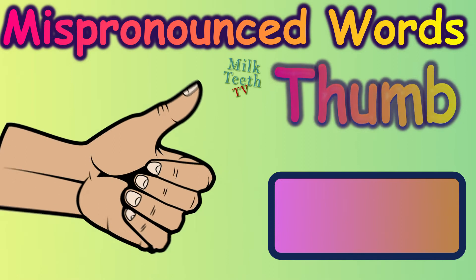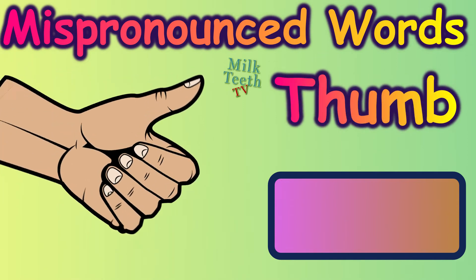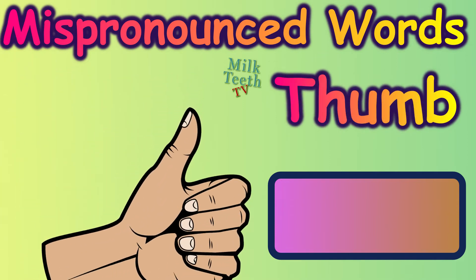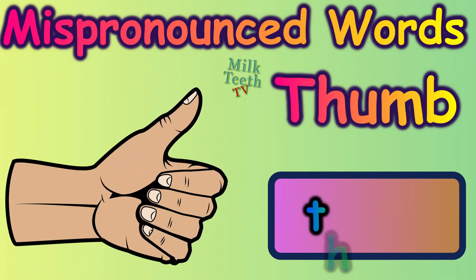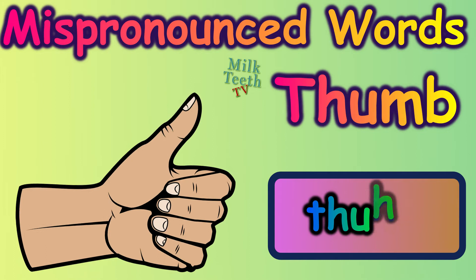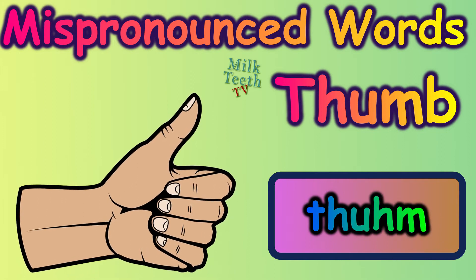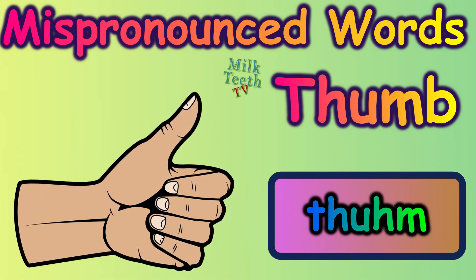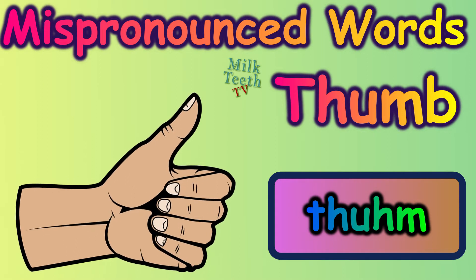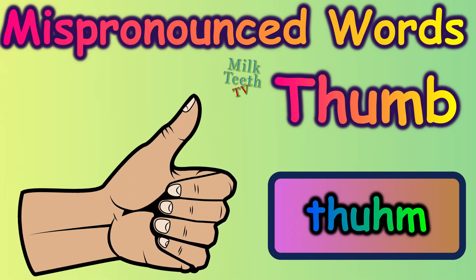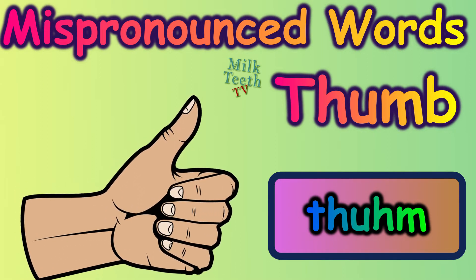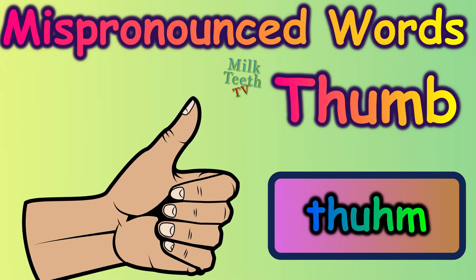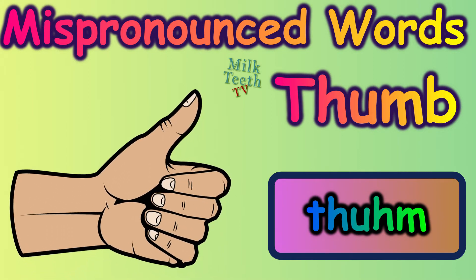There are other examples of similar words. Which body part is this? It's your thumb. In this word also, the letter B remains silent. We don't call it a thumb — we call it a thumb. The correct pronunciation is thumb.